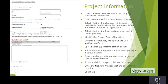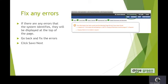To add multiple lines, please click on the plus sign to the left of the chart. The last step is to enter the network provider that the charging stations will be using and then click Save at the top of the page. If there are any errors the system identifies, they will be displayed at the top of the page. Please go back and fix the errors and then click Save Next.